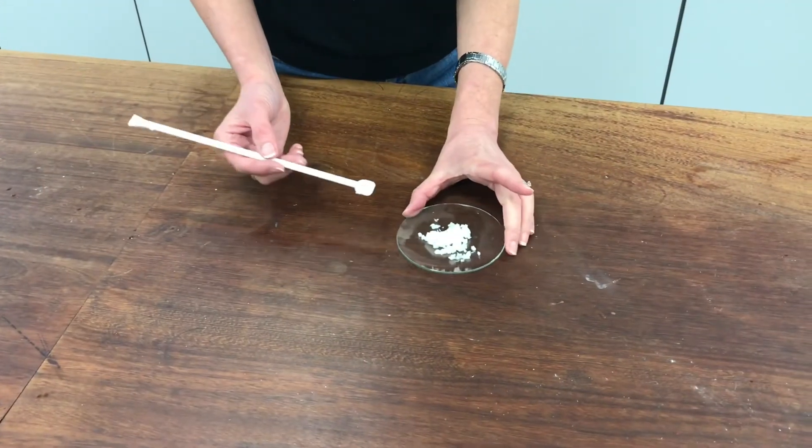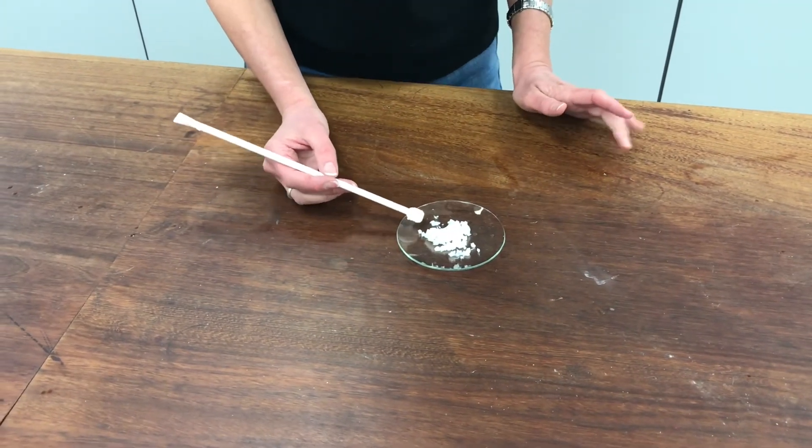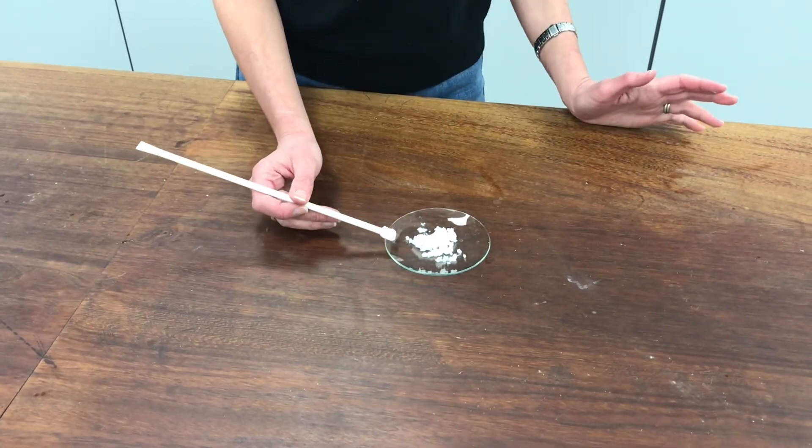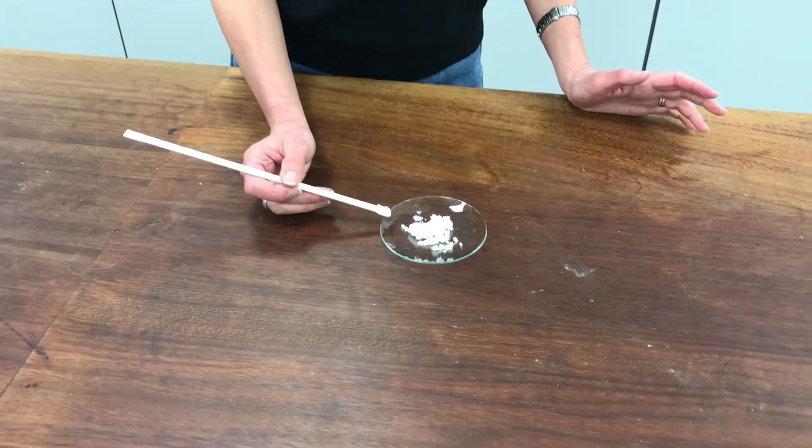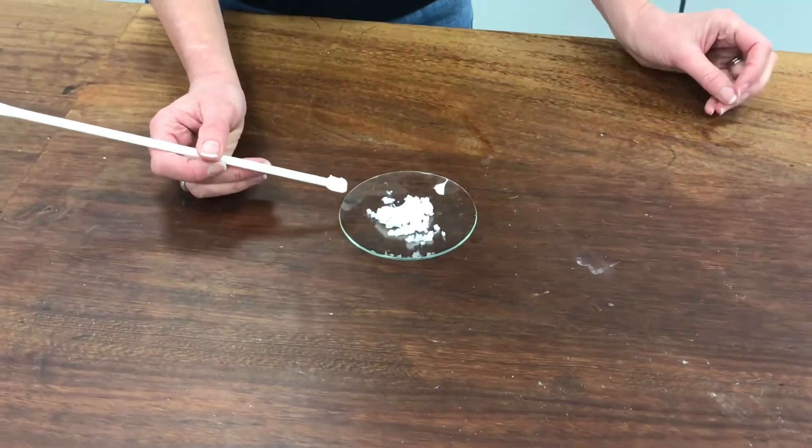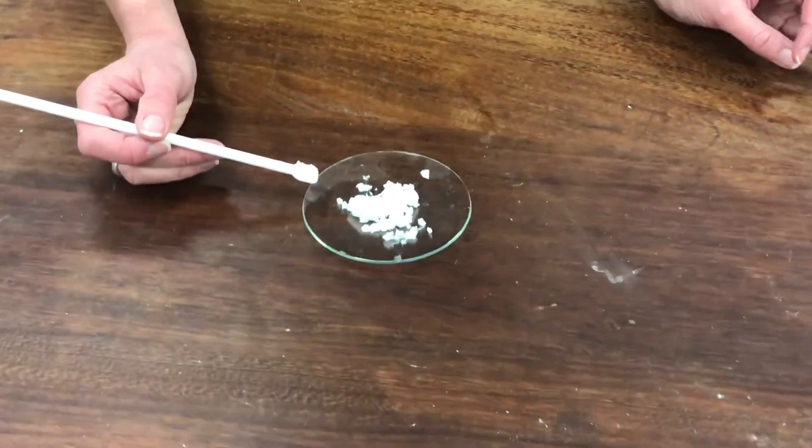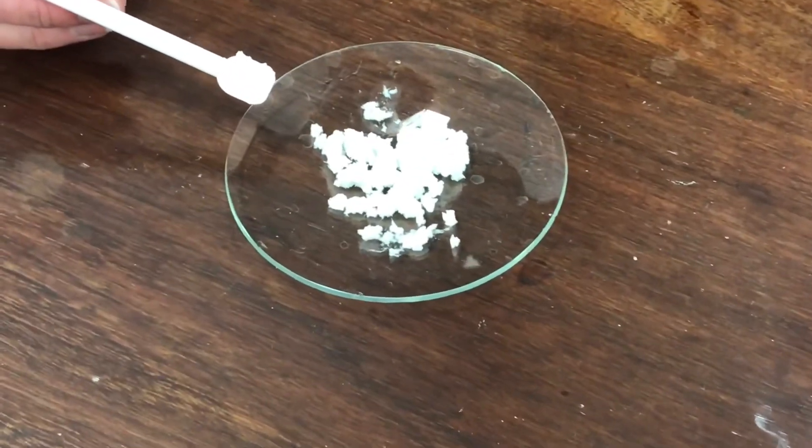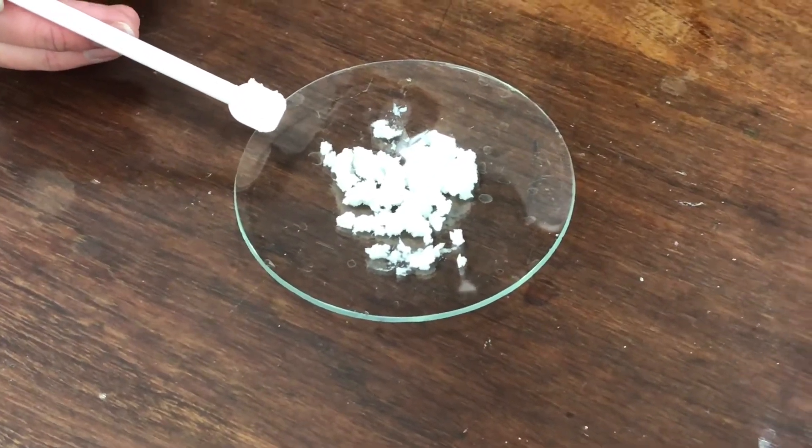So I've transferred my product now onto a watch glass and I should leave that to dry really, to air dry to constant mass. And then I could transfer it to a specimen bottle and calculate my percentage yield if I wanted to. Or probably more likely, as I've spent all this time recrystallizing it, I might like to try to take a sample and test the melting point of it.